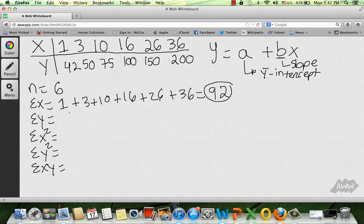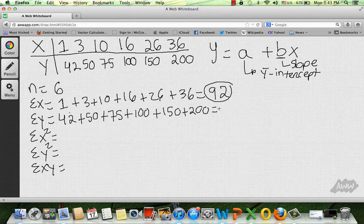I'm going to figure out the sum of y. I'm going to go ahead and do 42 plus 50 plus 75 plus 100 plus 150 plus 200. Put that into your calculator and that's going to give you 617.